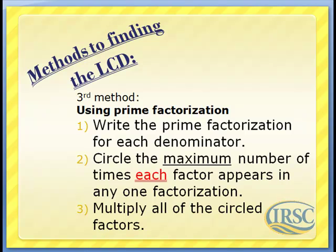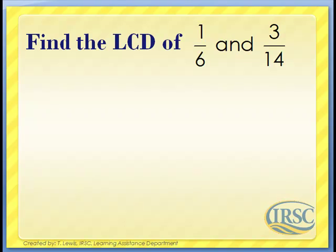Let's try an example. Find the LCD of 1/6 and 3/14. We're going to list the prime factors of each denominator, 6 and 14. This method is especially useful when working with very large numbers, like two- or three-digit numbers. But we can also use it here with smaller numbers like 6 and 14.